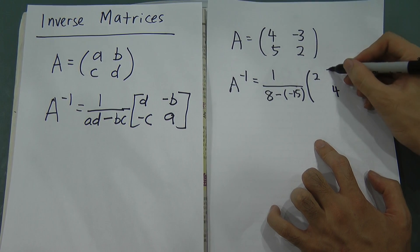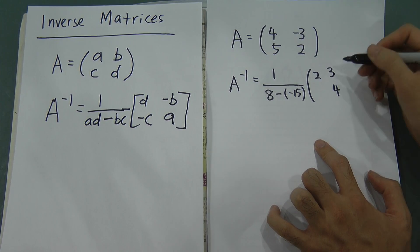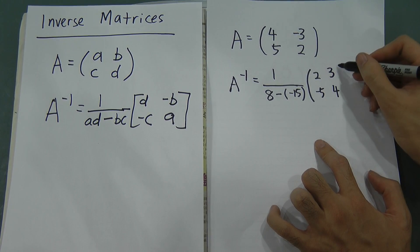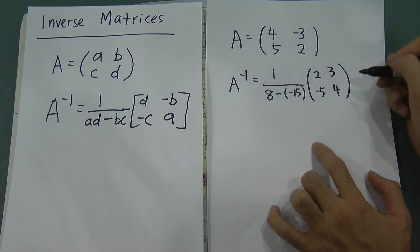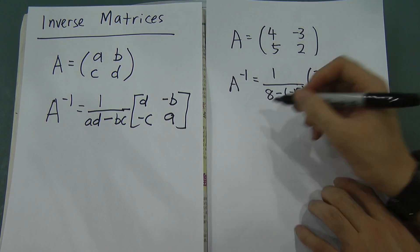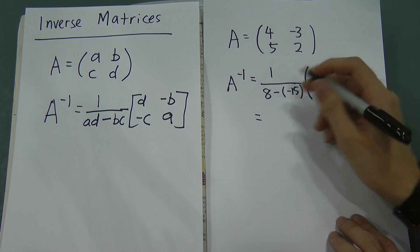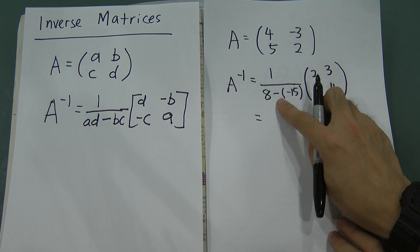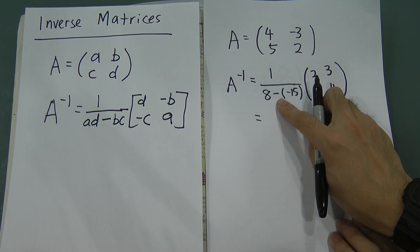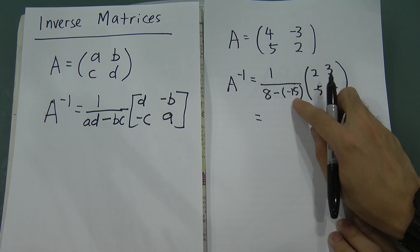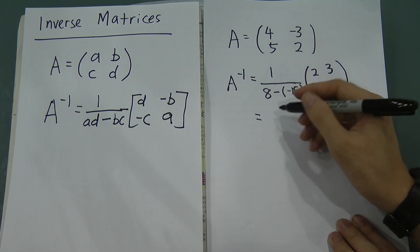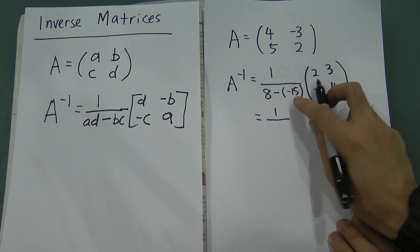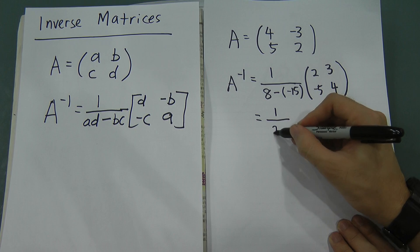Negative 3 adds a negative so we get 3, and 5 adds a negative so we get negative 5. Then we solve: 1 over 8 minus negative 15, which equals 8 plus 15, so we get 23.